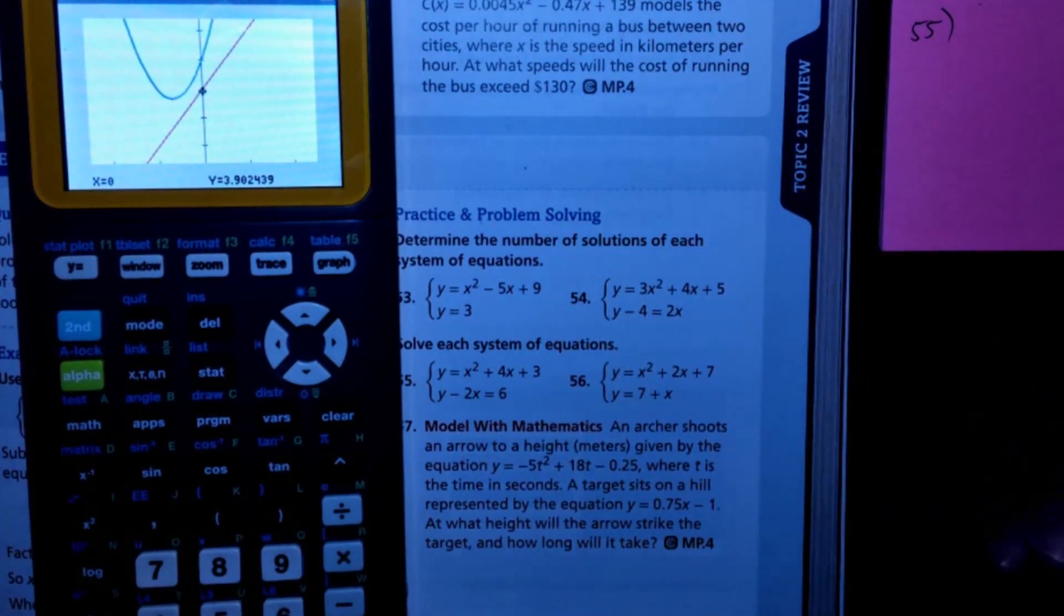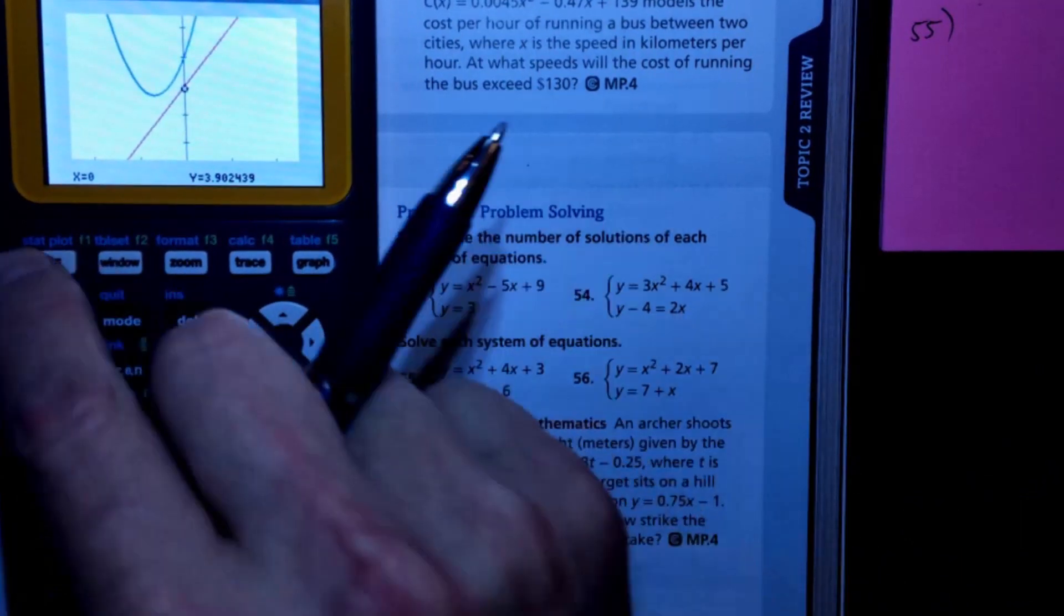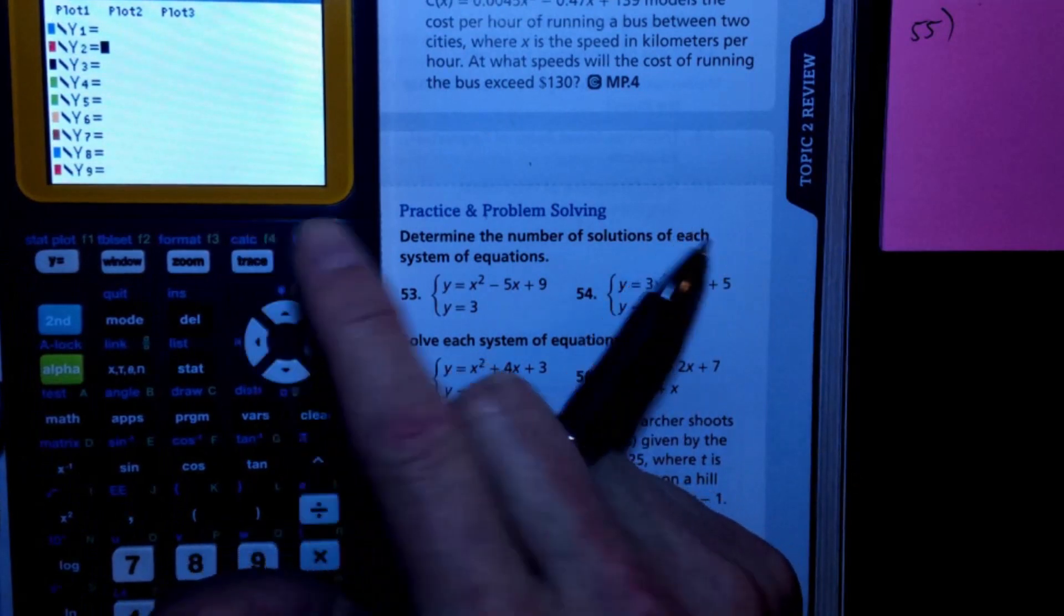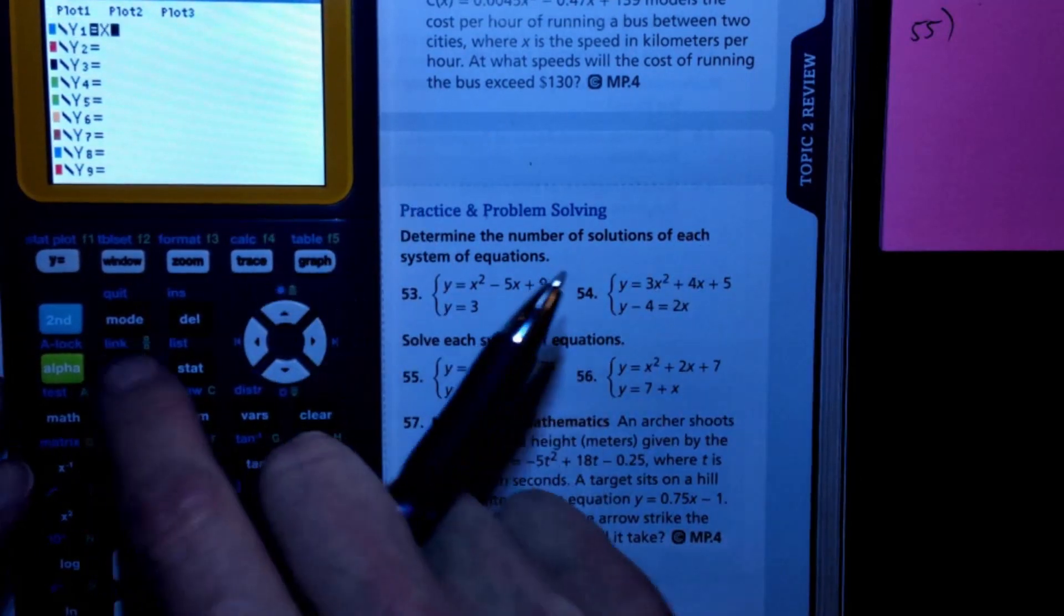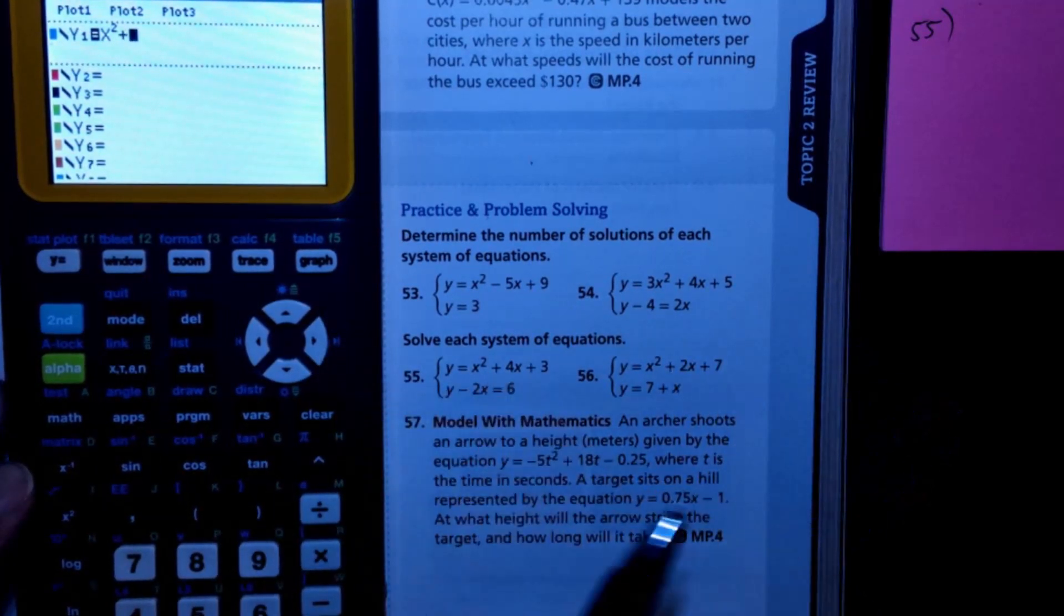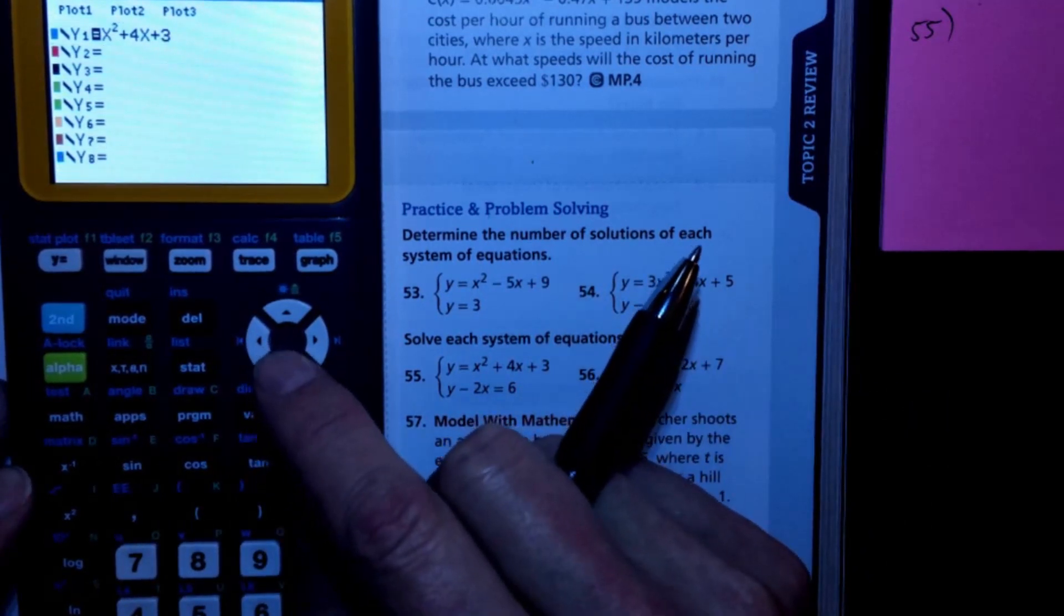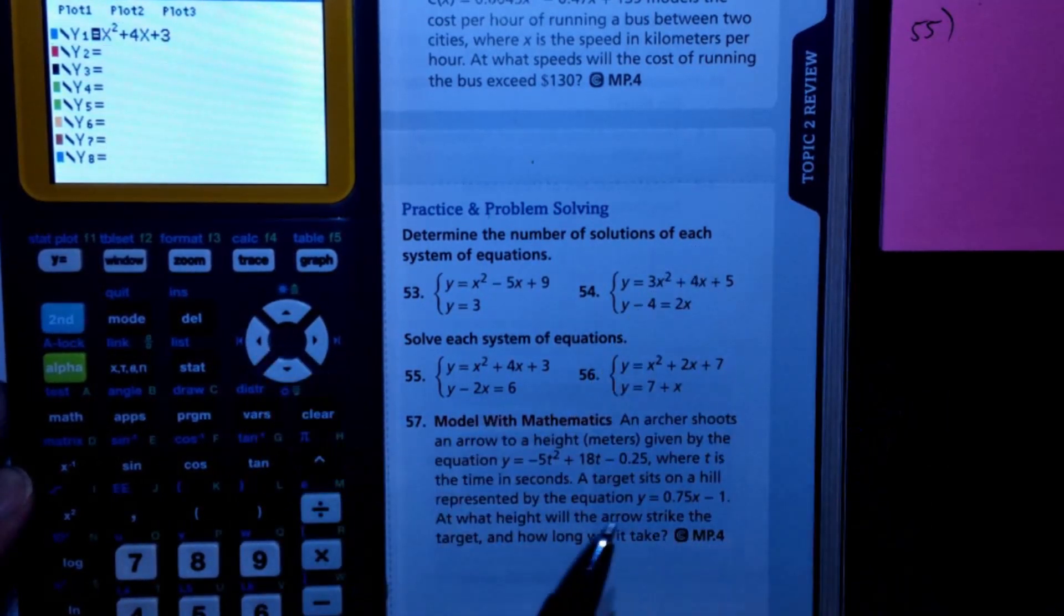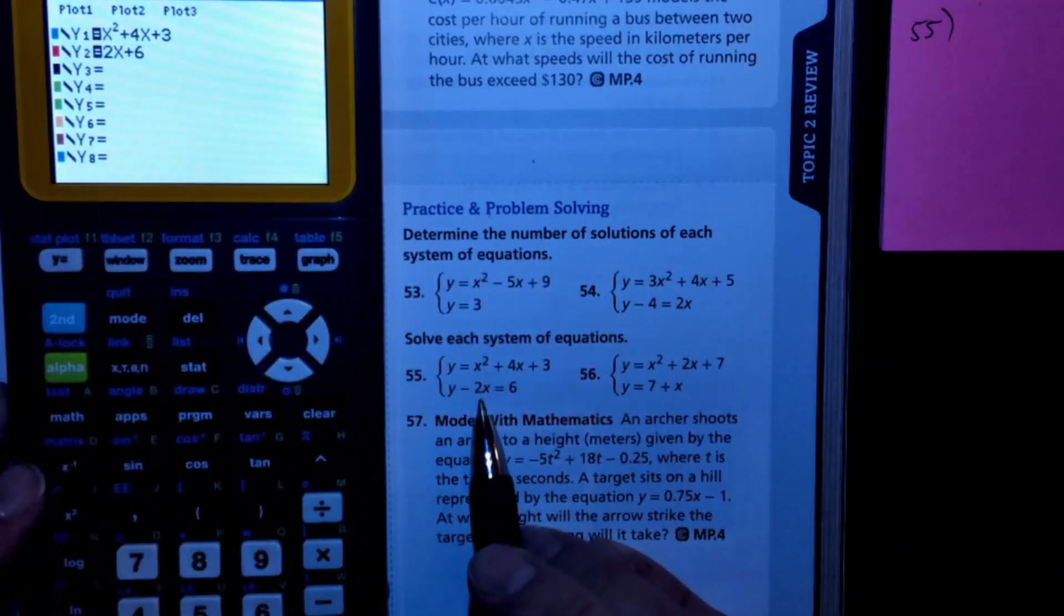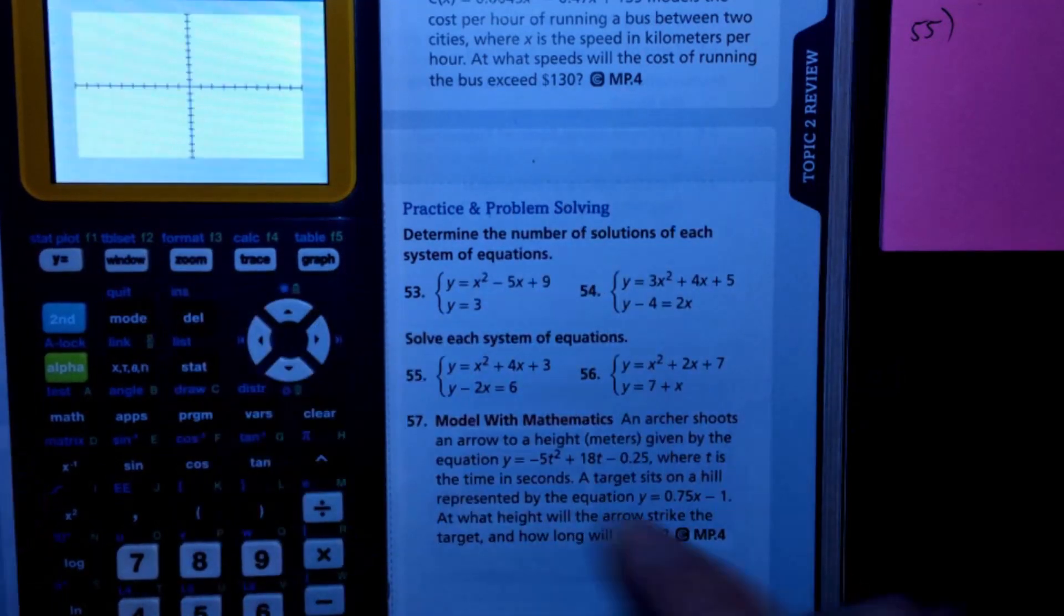All right, 55. Here we got different equations: x squared plus 4x plus 3. And then I got to swing that so it's positive 2x plus 6, because right here this guy's on the wrong side. Put him over there, and I'm going to do a zoom standard, see what I get.